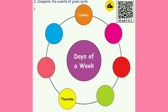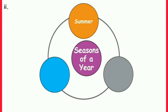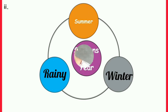Children, let's complete the events of the given cycle. First, we have days of a week. After Sunday: Monday, Tuesday, Wednesday, Thursday, Friday, and Saturday. Next, seasons of a year: summer, winter, and rainy. Thank you children.